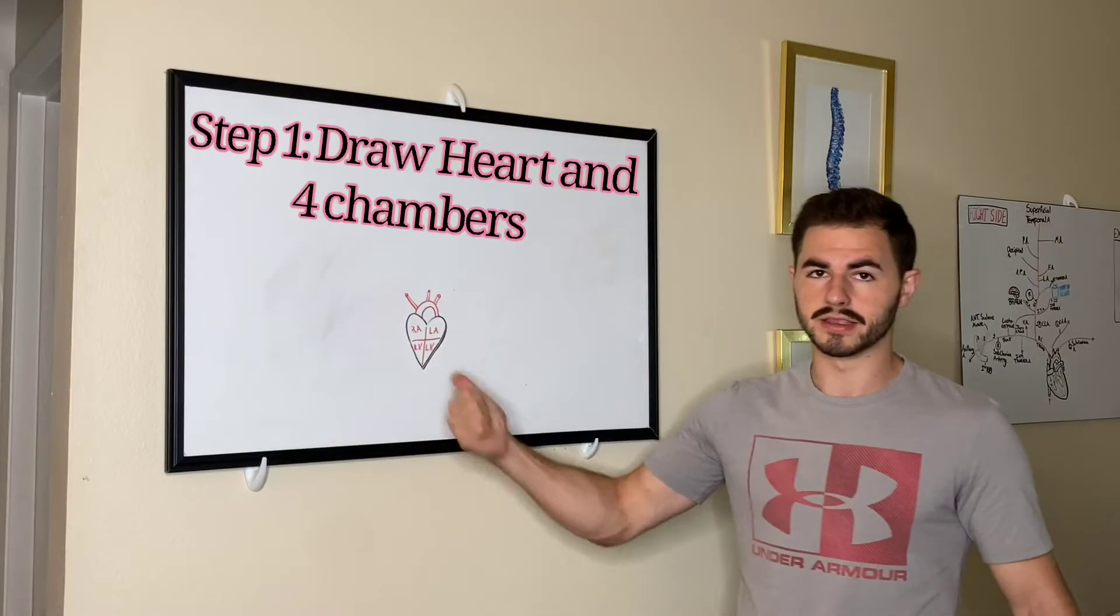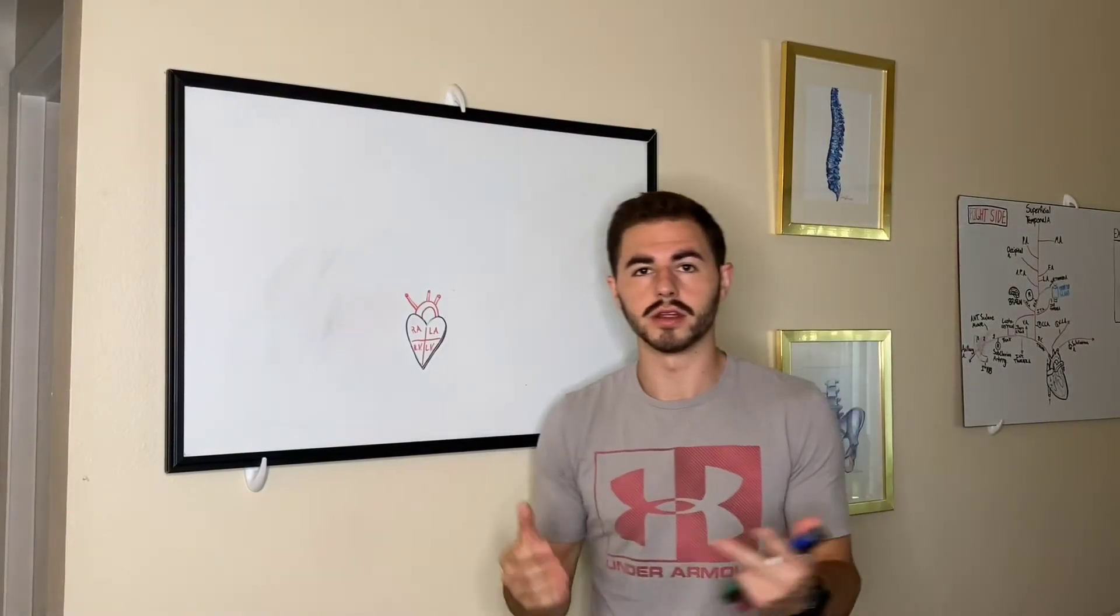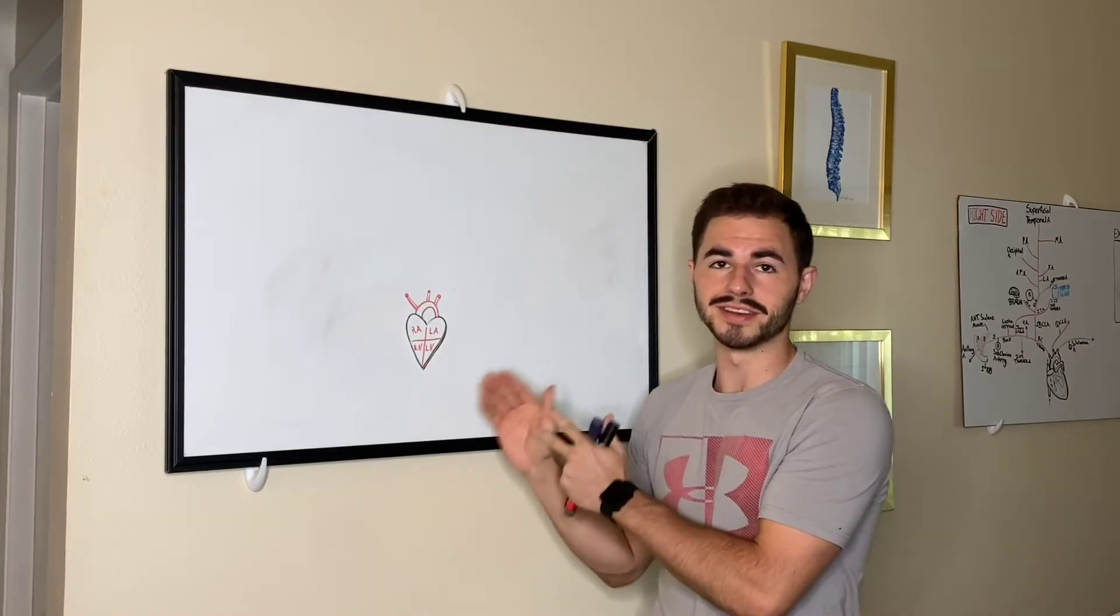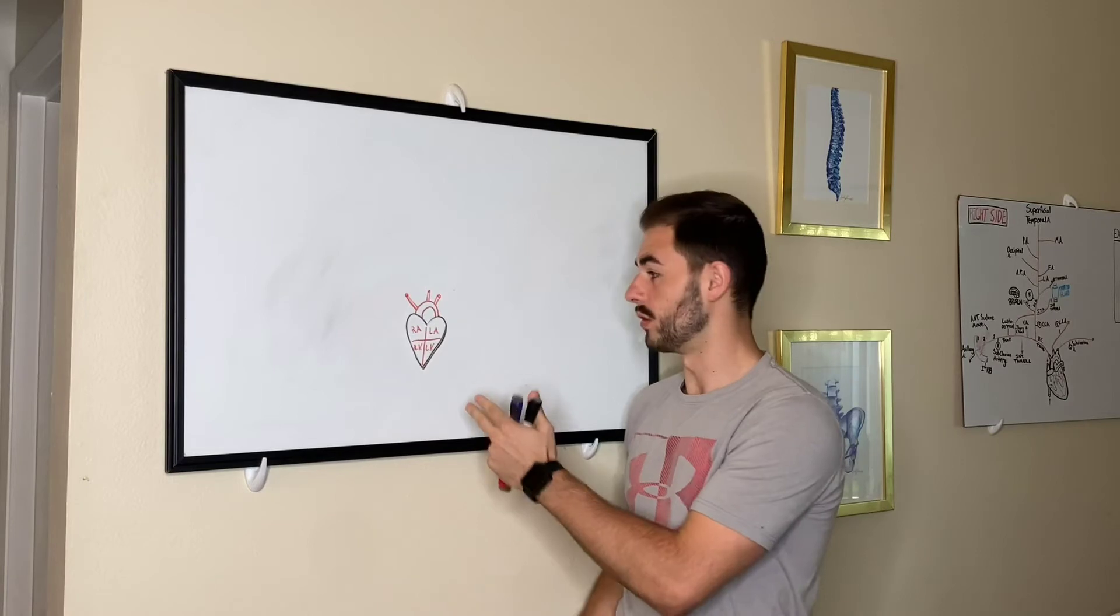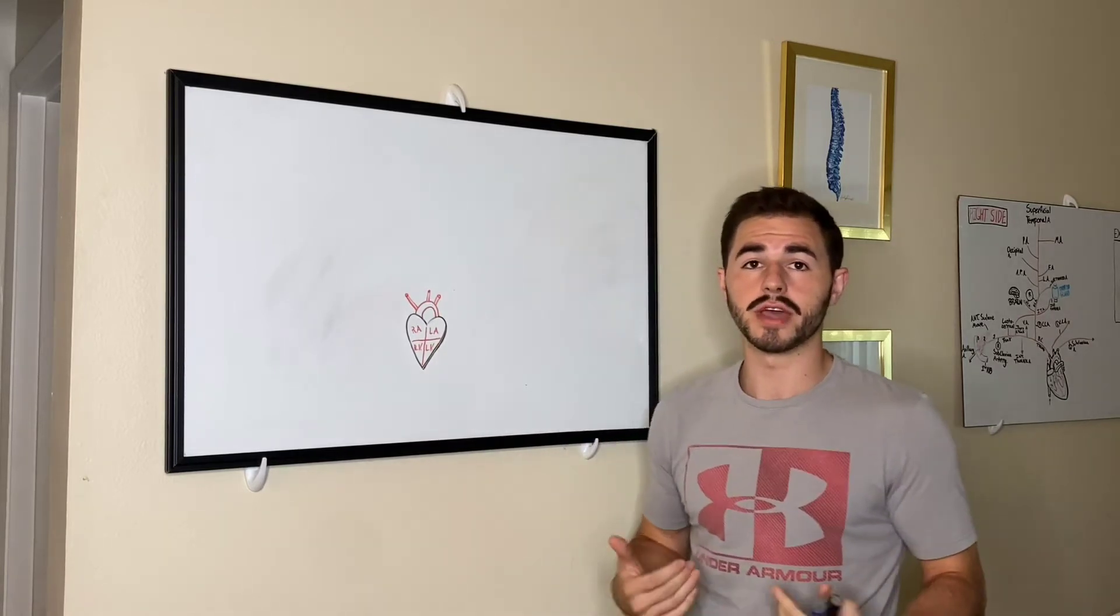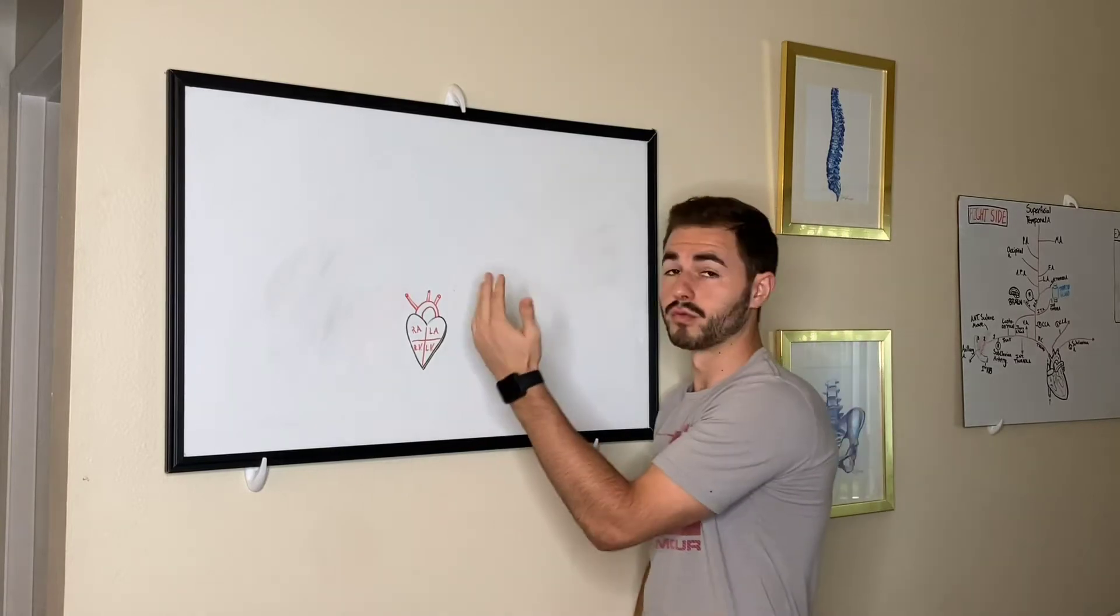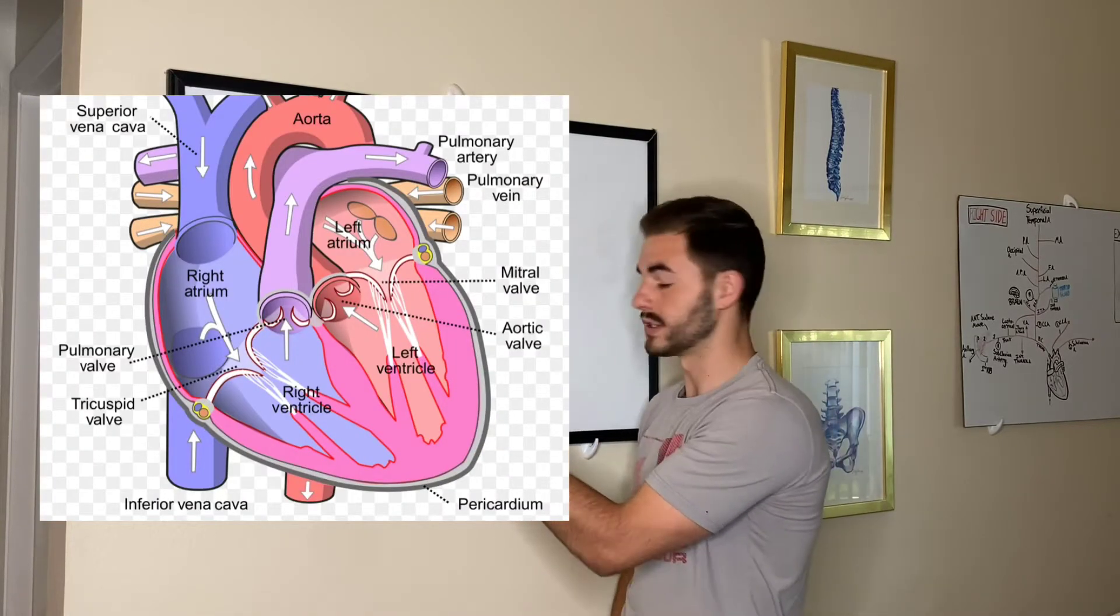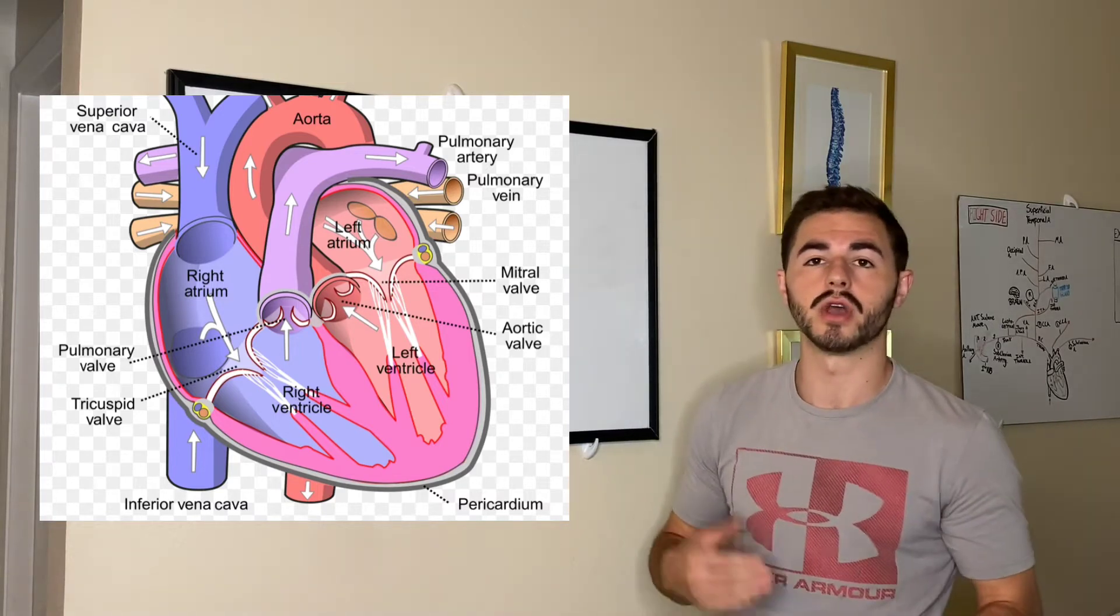So let's begin with step one. Now you don't have to worry and stress yourself out trying to draw an anatomically correct heart. It's no big deal. Just draw a heart as you know it and then divide it into four sections. This is so that you can be more in touch with the right atrium versus the ventricle and the left atrium versus the left ventricle. You have to know your positioning.